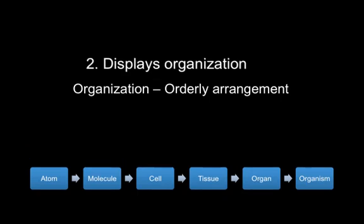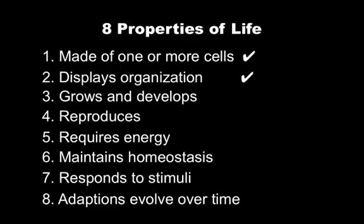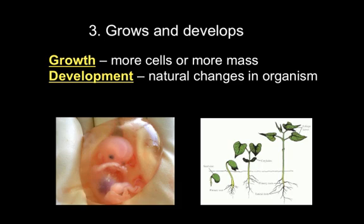Third, life must be able to grow and develop. Growth and development can differ depending on the type of organism. For multicellular organisms, growth means creating new cells to build a larger organism — humans grow from microscopic embryos into larger multicellular organisms. Unicellular organisms can grow as well, only this occurs at the cellular level with the cell simply becoming larger. Organisms also develop by going through natural changes such as growing hair, aging, or reaching sexual maturity.